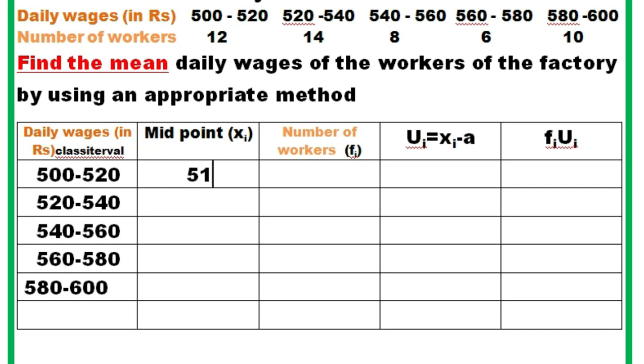Midpoint: I already told you that we have to add the lower limit, that means 500 plus 520 divided by 2, we'll get 510. As we can see, the length is 20, so we can increase it by 20, that means adding 20 to the preceding one.